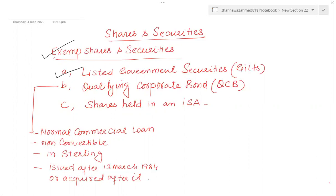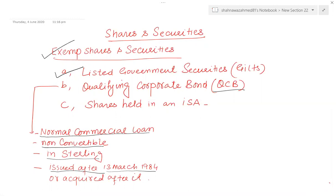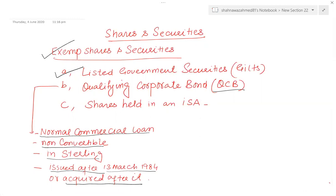As far as qualifying corporate bonds (QCBs) are concerned, the characteristics of a QCB are: it is a normal commercial loan which is non-convertible, held in sterling, and issued after 13th March 1984. If shares were acquired before 13th March 1984, they are not considered a qualifying corporate bond and there will be no exemption on them.